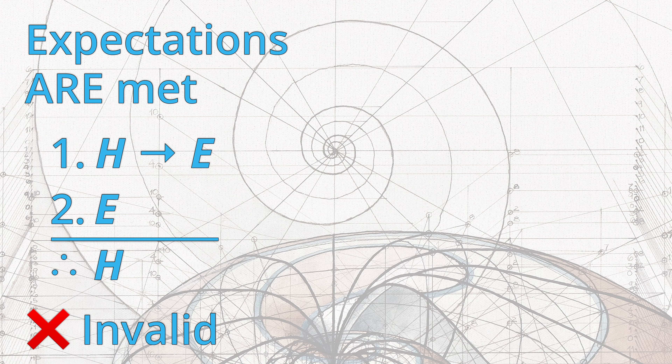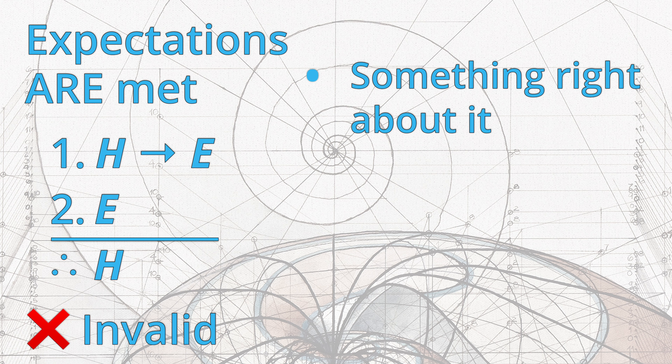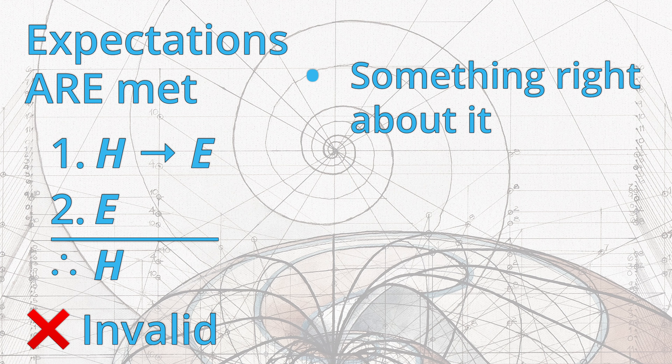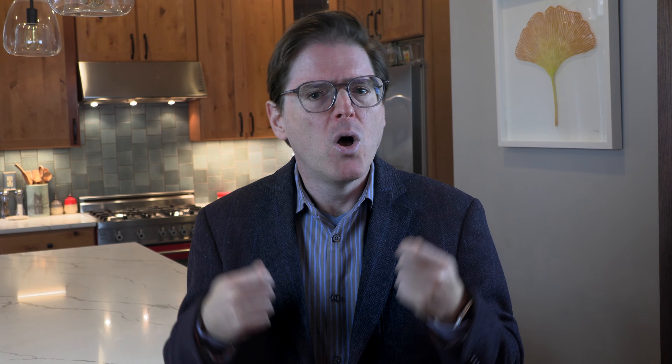But other kinds of arguments are also relevant for science. Think of the case where expectations are met by the experiment: if H, then E; E; therefore H. We said that this isn't a valid deductive argument, but there's still something right about it. The school-aged kid may not know for sure that it's Tuesday once their parent tells them they have to go to school, but this is additional evidence in favor of the hypothesis that it's Tuesday. One of the puzzles in the philosophy of science is how to describe the relationship between evidence that meets your expectations and the hypothesis that generated those expectations in the first place. It seems clear that evidence in line with your expectations should strengthen your confidence in the truth of the hypothesis, even if it isn't deductively guaranteed.